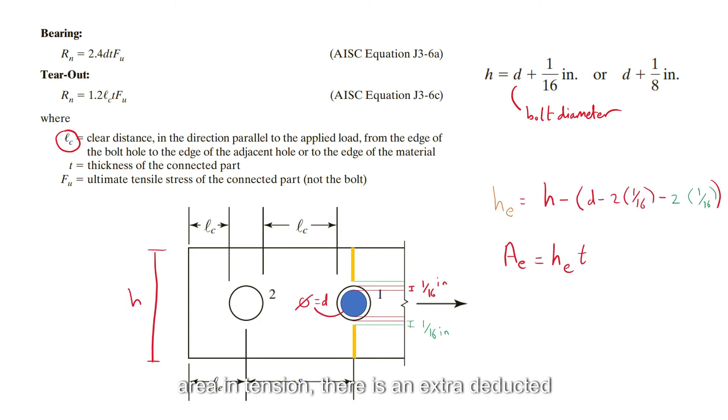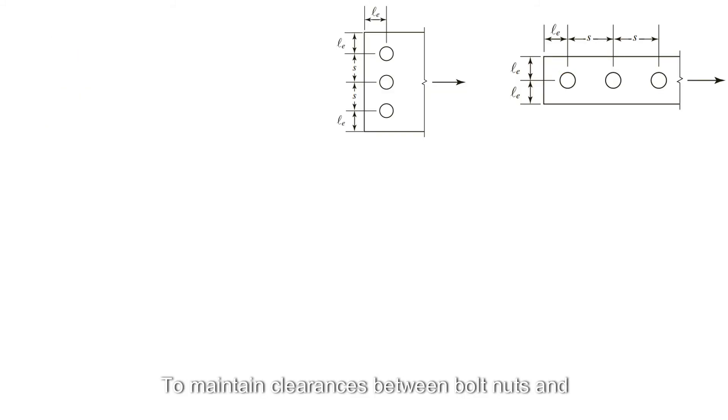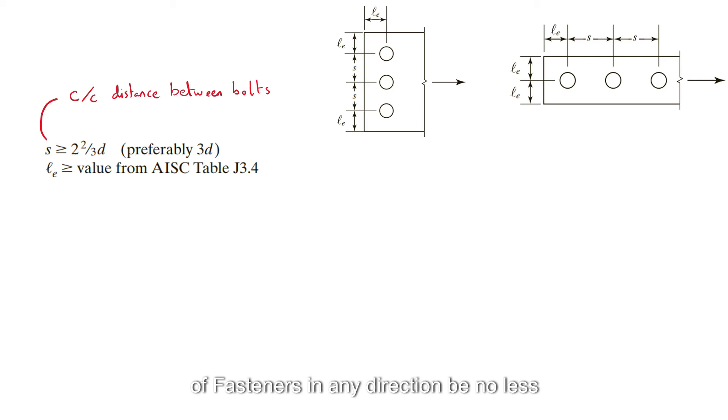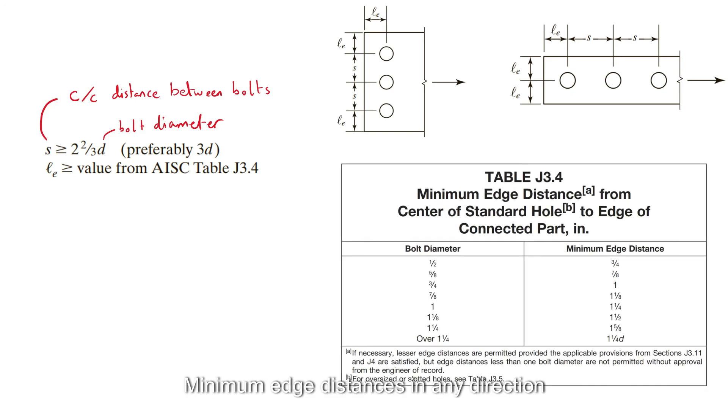To maintain clearances between bolt nuts and to provide room for wrench sockets, AISC J3.4 requires that center-to-center spacing of fasteners in any direction be no less than 2 and 2/3 times the bolt diameter and preferably no less than 3 times the bolt diameter, where D is the fastener diameter. Minimum edge distances in any direction measured from the center of the hole are given in AISC table J3.4 as a function of bolt size.